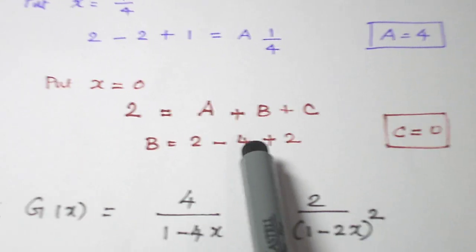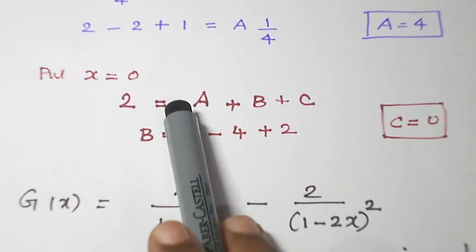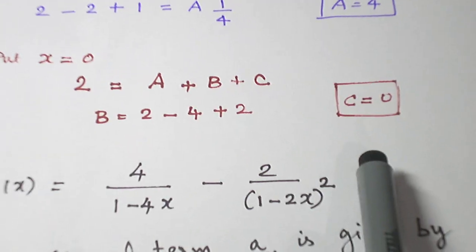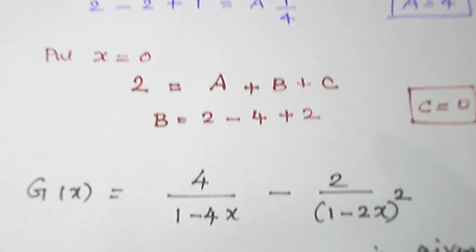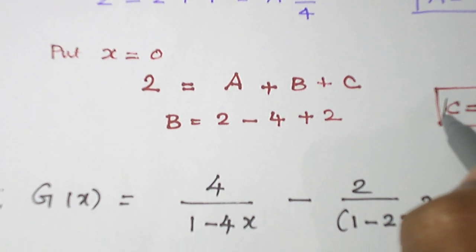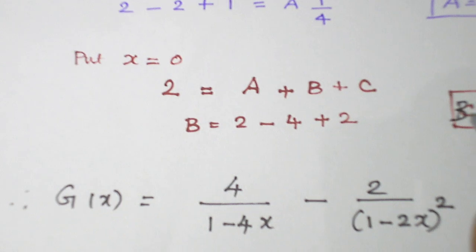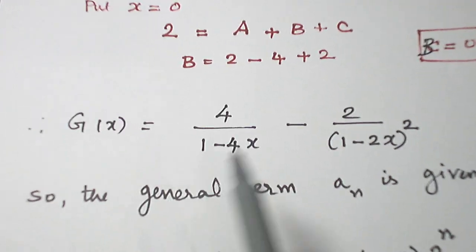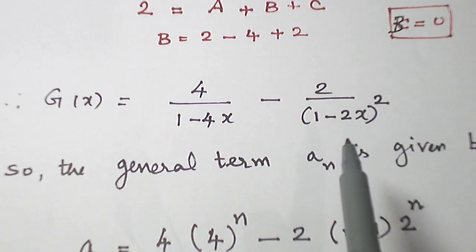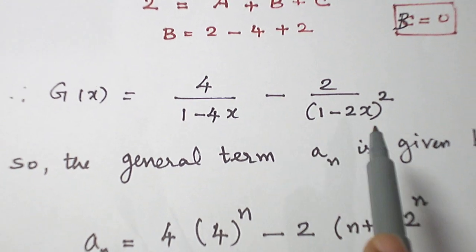And to get the other value, you just substitute any x value. I put simplest x value 0. I got B = 0. Not C = 0. B = 0. I got it. And apply this ABC values in the generating function in the partial fraction. We get this one.